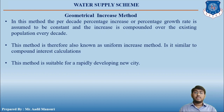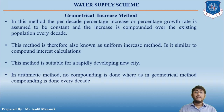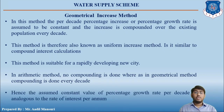This method is suitable for a rapidly developing new city. In the arithmetic method, no compounding is done, whereas in the geometrical method compounding is done every decade. The assumed constant value of percentage growth rate per decade is analogous to the rate of interest per annum.